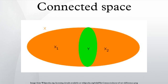Stronger forms of connectedness: there are stronger forms of connectedness for topological spaces. For instance, if there exist no two disjoint non-empty open sets in a topological space X, then X must be connected, and thus hyper-connected spaces are also connected. Since a simply connected space is, by definition, also required to be path connected, any simply connected space is also connected.